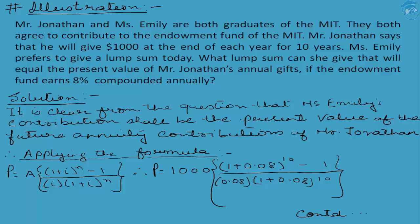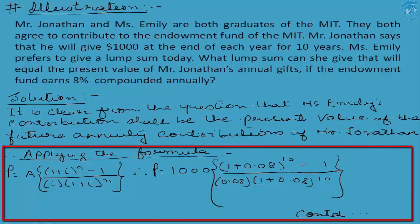We can suggest that Ms. Emily should deposit the present value of the future annuities of Mr. Jonathan, because that represents the current lump sum amount she needs to deposit. So applying the formula directly — we can use P(1 + i)^n = A[(1 + i)^n - 1] / i, equating the future value of a lump sum and future value of an annuity. But since we have derived the formula for calculating the present value of future annuities from that mother formula, it is better to use the derived formula directly, which saves time and effort.